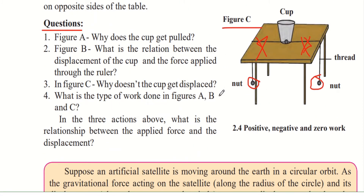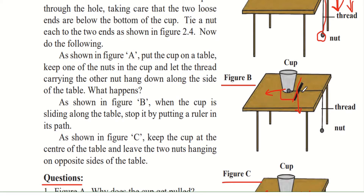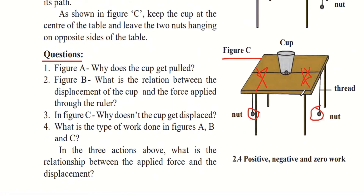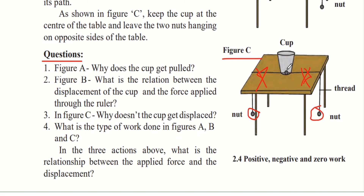The type of work done in each figure: in figure A, force and displacement are in the same direction — the nut pulls the string and the cup moves the same way — so this is positive work. In figure B, the ruler stops the cup, so this is negative work. In figure C, forces are equal and opposite, cancelling out — no displacement occurs, so work done is zero. Work equals force times displacement, and since displacement is zero, work done is zero.